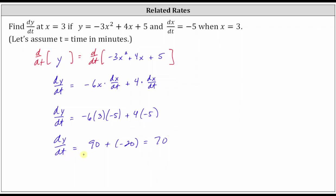And now let's take a moment to explain what this means. dy/dt is measuring the change of y with respect to time t in minutes. So if we make dy/dt a fraction as 70 over one, this is telling us that y is increasing by 70 units per minute when x equals three and dx/dt equals negative five. I hope you found this helpful.